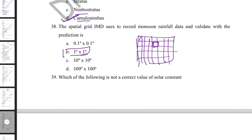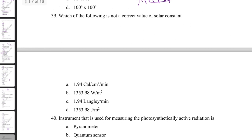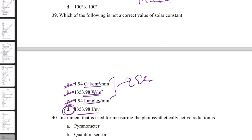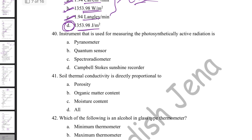Which is not a correct value of the solar constant? The solar constant is 1.94 cal/cm²/min, which equals 1.94 langley/min — both correct. It is also 1353.98 W/m² — correct. The incorrect value is expressing it as 1353.98 J/m². Remember these three correct values for the solar constant.